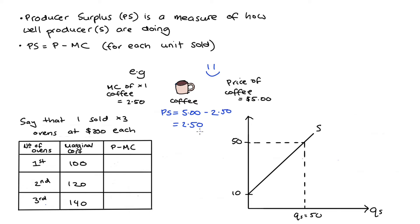If we make more than one unit we add up over all the units produced. So let's look here at the table on the bottom left-hand corner of the screen. Let's say I make and sell ovens. I sell three ovens for $200 each. Now in the table I can see that the marginal cost of each oven is, for the first it's $100, for the second it's $120 and for the third it's $140.